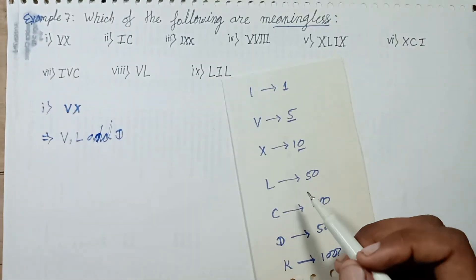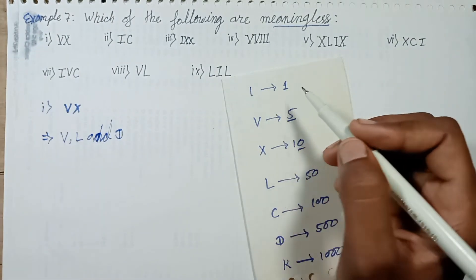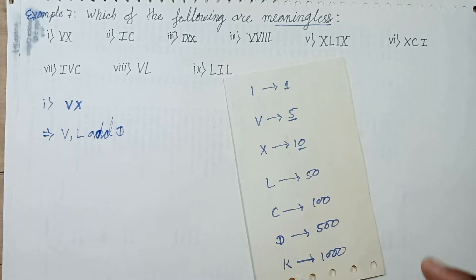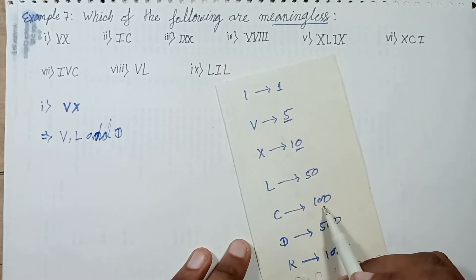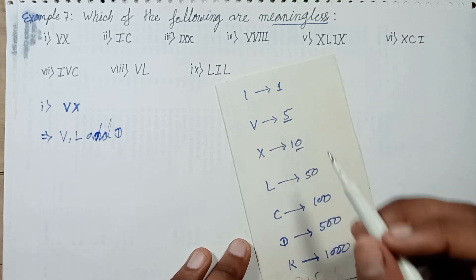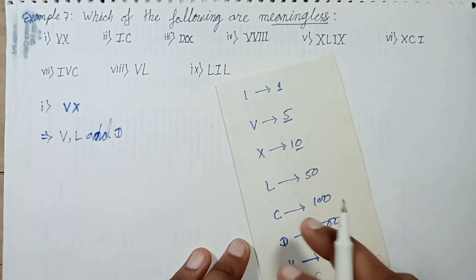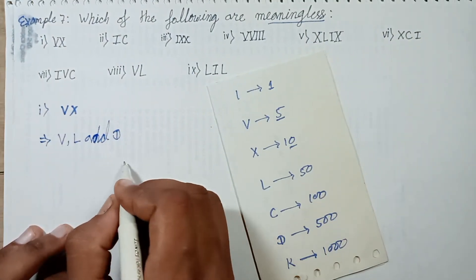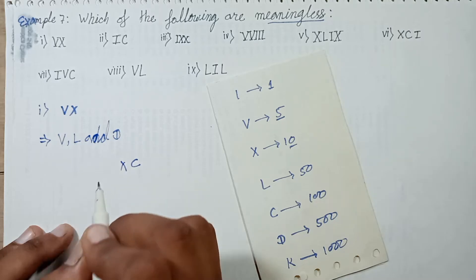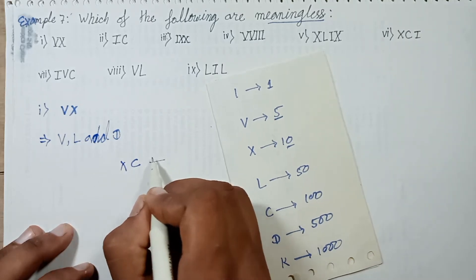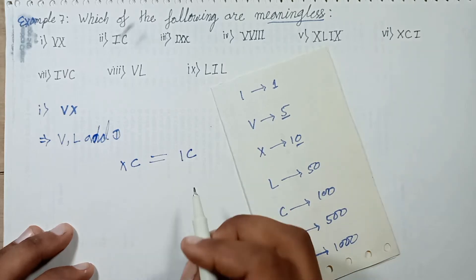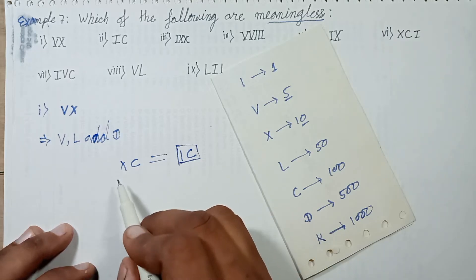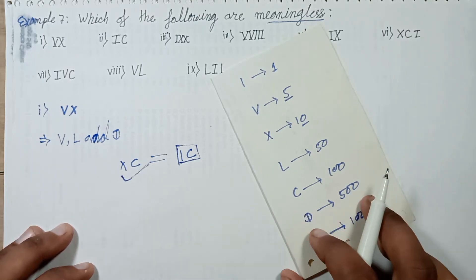Question number 2 is IC. I represents 1 and C represents 100. You cannot subtract C by 1 — C can only subtract 10, not 1. So subtracting 1 from C is not satisfied. This Roman numeral form is not satisfied.